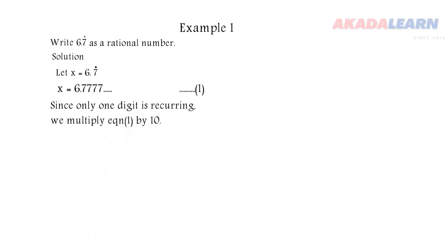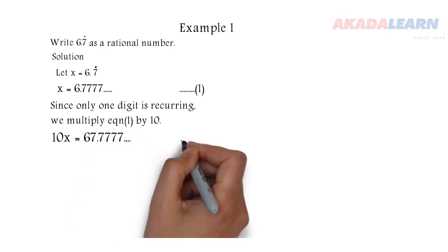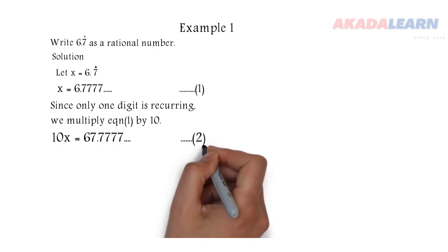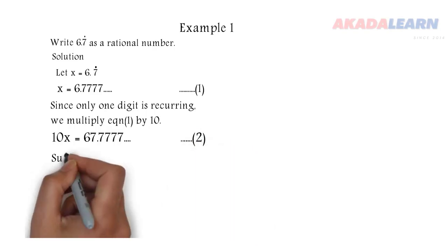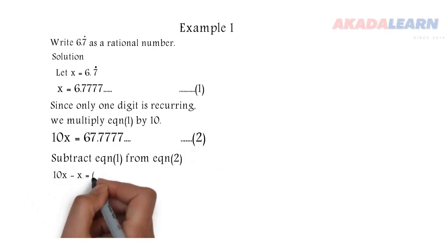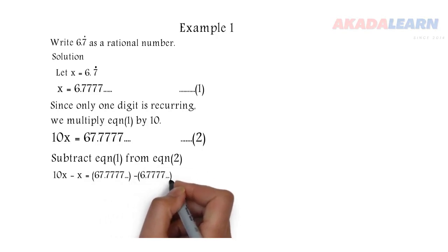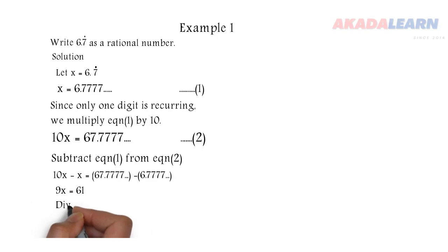So we have 10 times x which is 10x, and 6.777 times 10 is 67.777. So we are going to call this equation 2. Remember we are looking for x. So we subtract equation 1 from equation 2. So we have 10x minus x equals to 67.777 minus 6.777. 10x minus x is 9x, and when we do the other subtraction we get 61. So we divide both sides by 9 to make x stand alone. So x is 61 over 9.